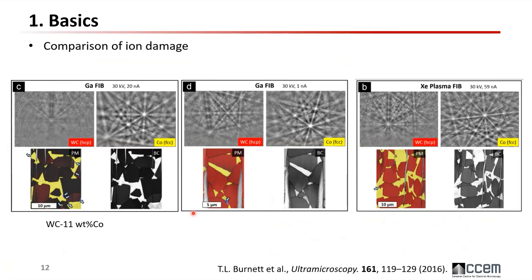Comparing with that, with xenon even at 60 nanometer step size you can still get good contrast, good-quality Kikuchi patterns with no indexing problems. By the way, what people typically do in a gallium FIB is add an additional low-current cleaning step on the surface — for example going down to 1 nanoampere — to clean the surface and improve the EBSD quality.